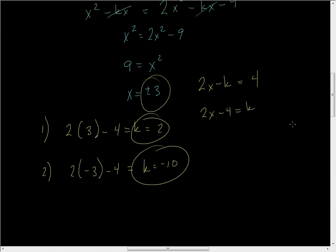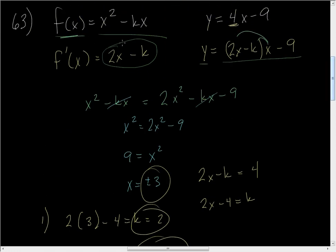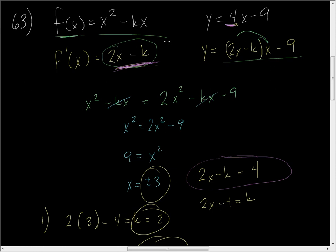Don't forget: the derivative is the slope, and the slope is the slope of the tangent line. The other key part was that when the two functions touch at the point of tangency, the y-coordinates have to be the same — meaning the function values must be equal. That's how we were able to find the x values. Try that technique with number 65.